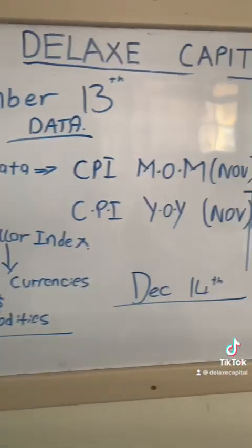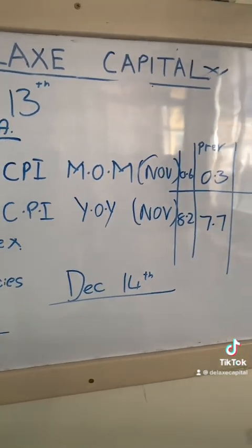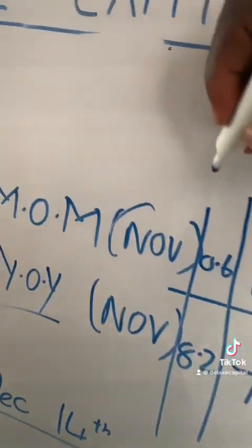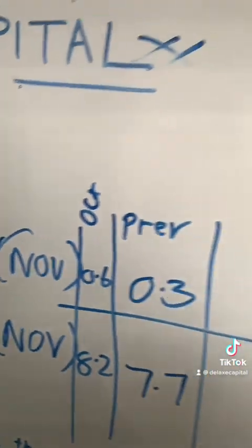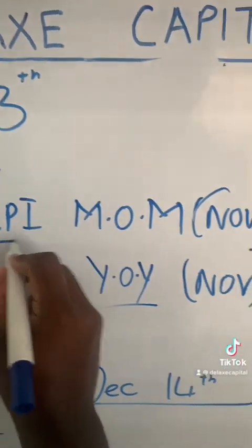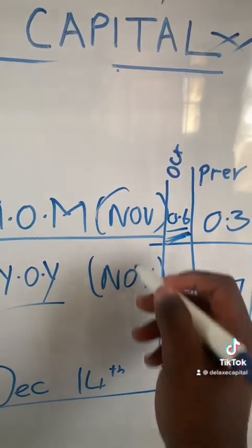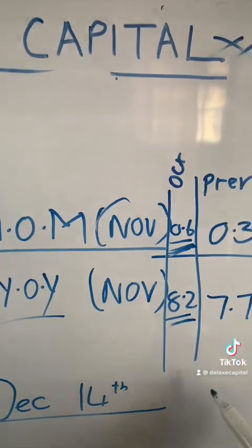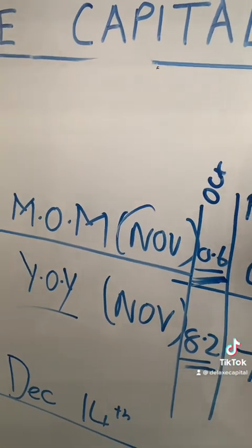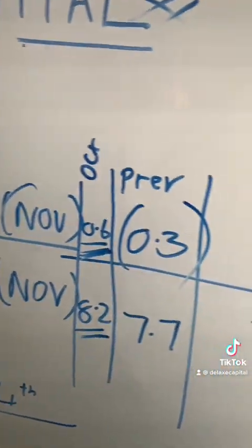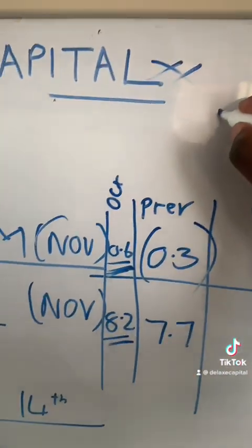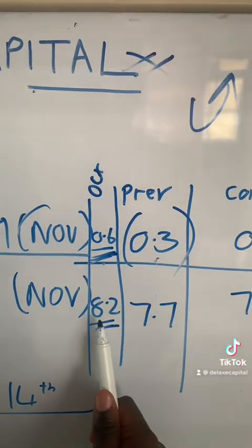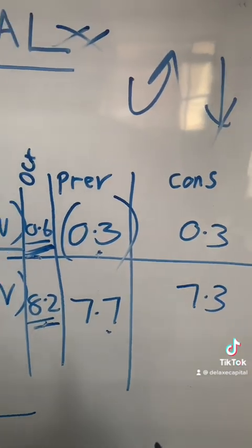We are expecting CPI month-over-month and CPI year-over-year for the month of November. If we check here, in the month of October the core CPI month-over-month was 0.6, and the whole CPI index was 8.2. Now in the month of November when the data was released, you can remember the market started having a reversal — it was going down — but the numbers reduced significantly from 8.2 to 7.7 and from 0.6 to 0.3.